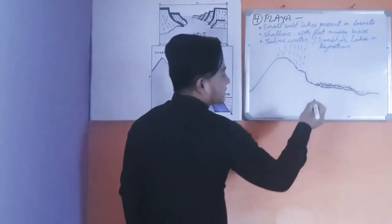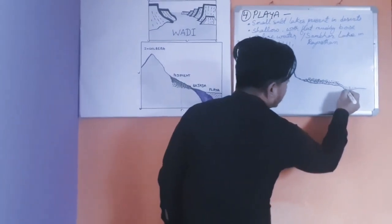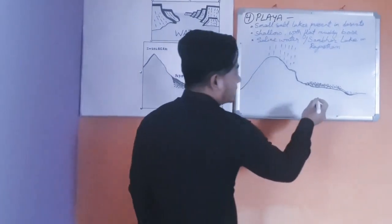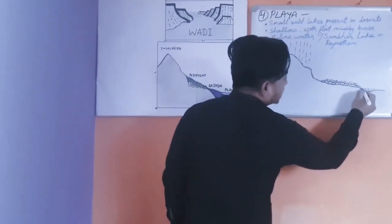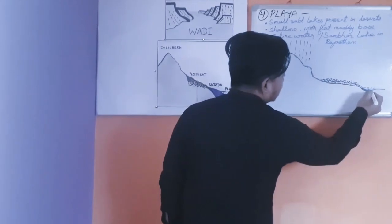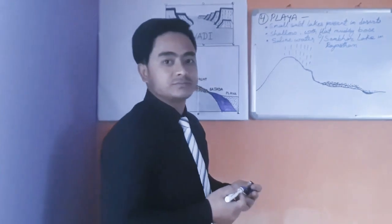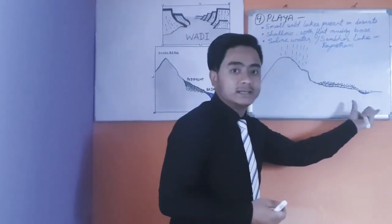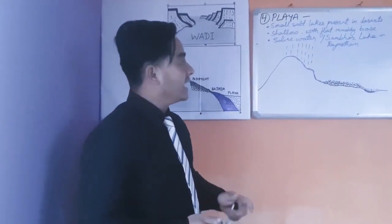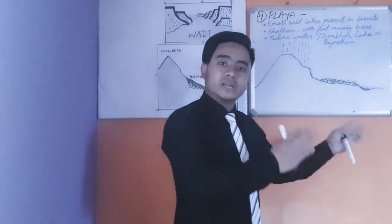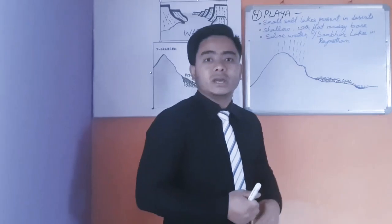This lake is saline in nature, meaning the water present in it is salty. The base of the lake is muddy, as all the sand and sediment brought by running water deposits at the base. This type of small salt lake formed in desert areas is called playa. Sambhar Lake in Rajasthan is a common example of playa in India.